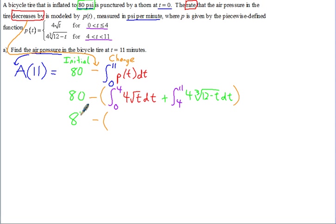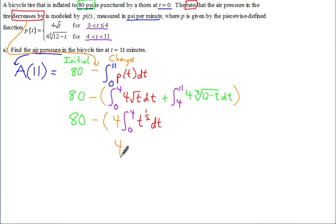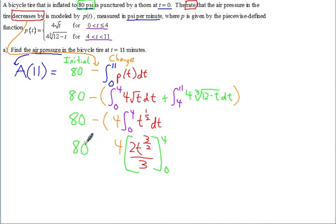Let's simplify each piece. We can pull out the constant of 4, giving us the integral from 0 to 4 of t to the 1/2 power. When you integrate t to the 1/2, you get t to the 3/2 times 2/3, evaluated from 0 to 4. You can pull out the 2/3, and combined with the 4 you get 8/3 on the outside. Rewriting t to the 3/2 in radical form: that's the square root of t cubed.